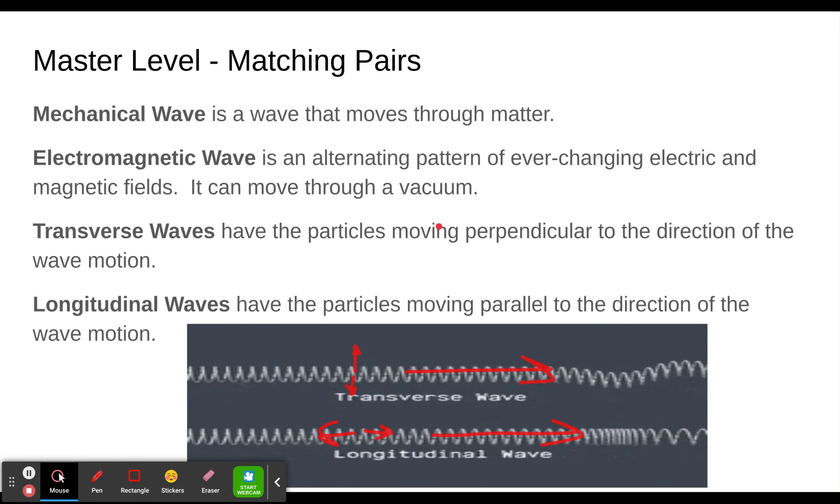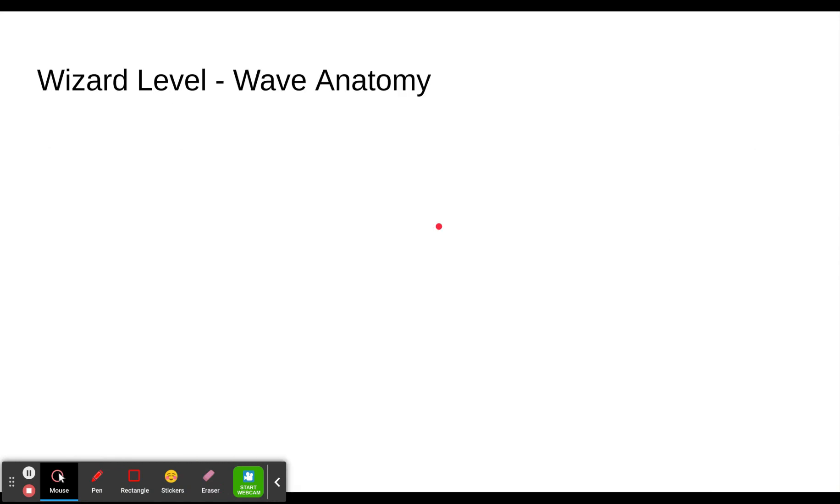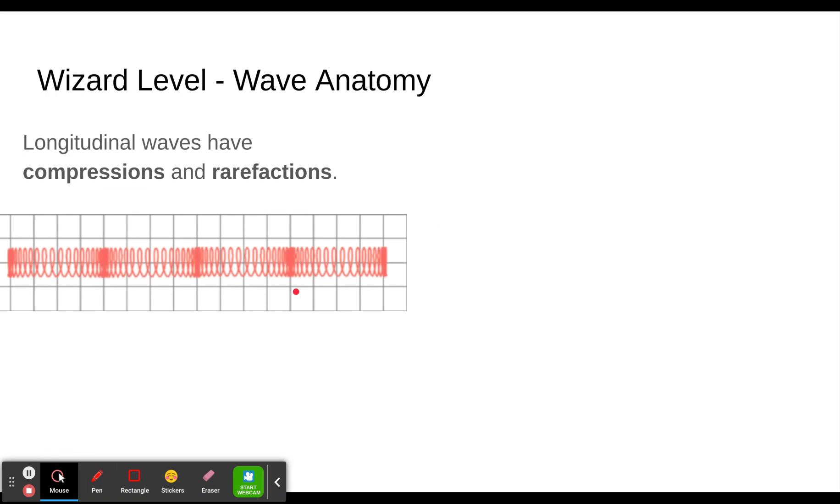The final level, the wizard level, wave anatomy. You have to know a few definitions. First of all, let's look at longitudinal waves in a little bit more detail. The two parts of them are called compressions and rarefactions. We can see a compression here where they're squeezed together and a rarefaction here where they're spread apart. If this was in the air, you might say an area of high pressure and an area of low pressure. That's what you would see in a sound wave for example.